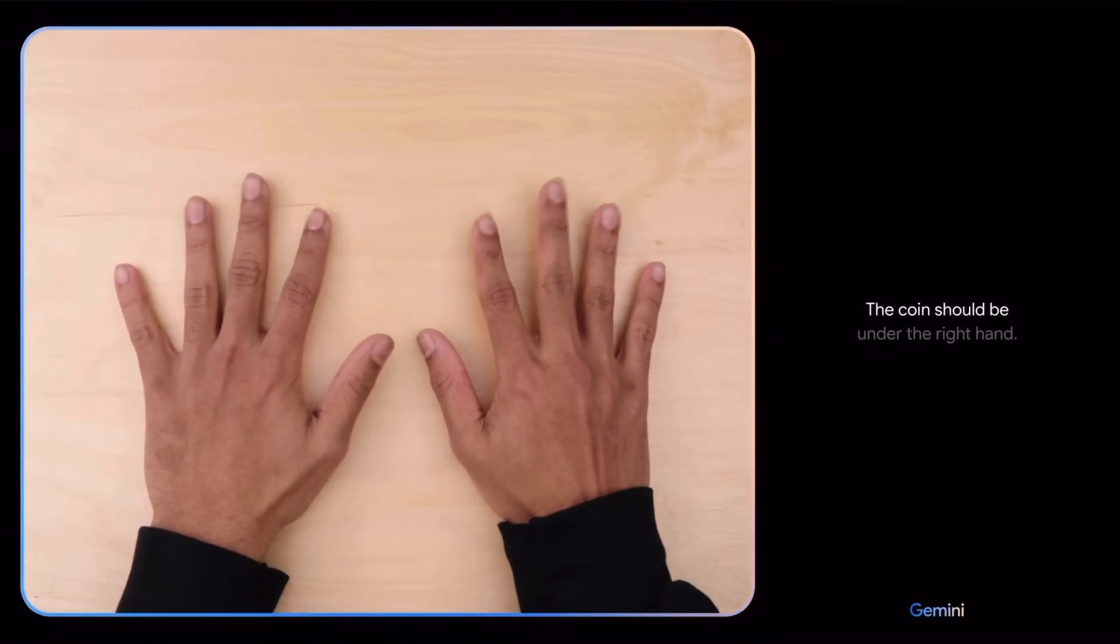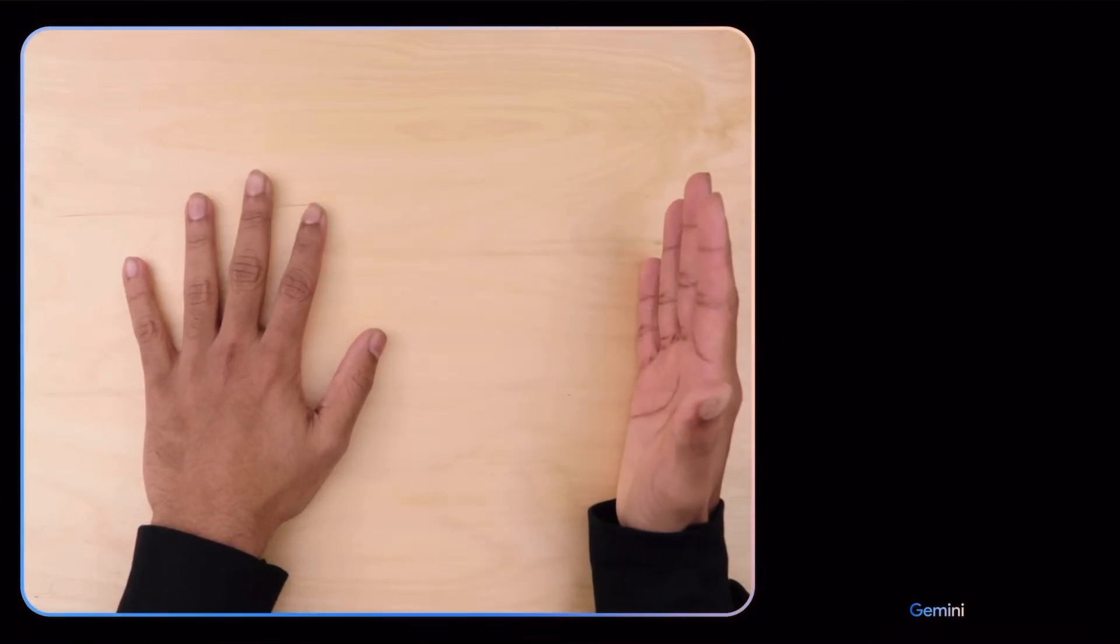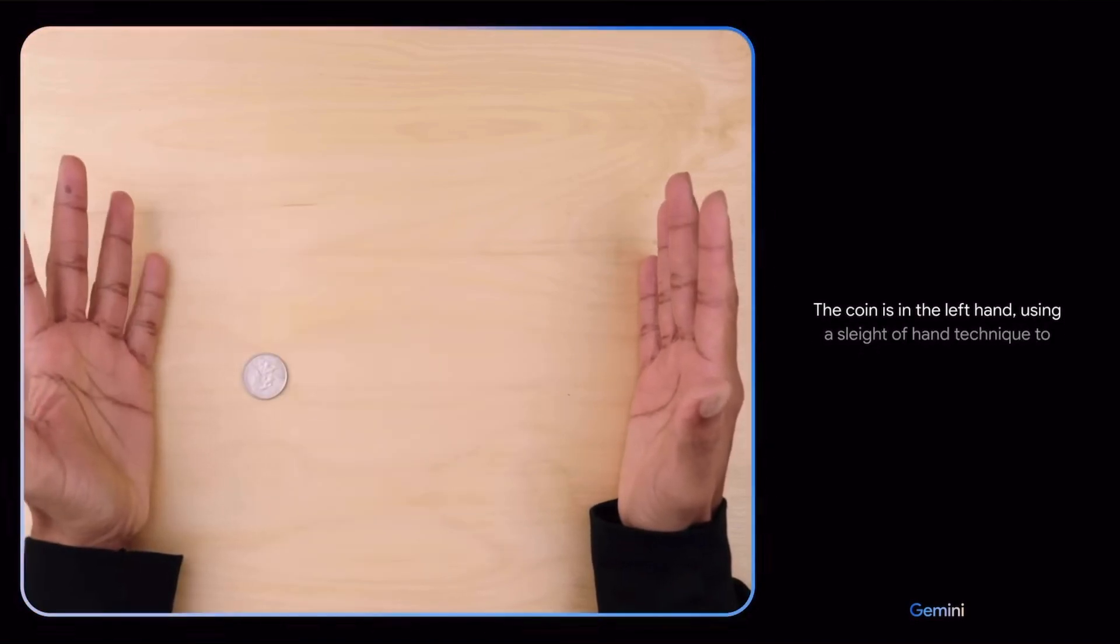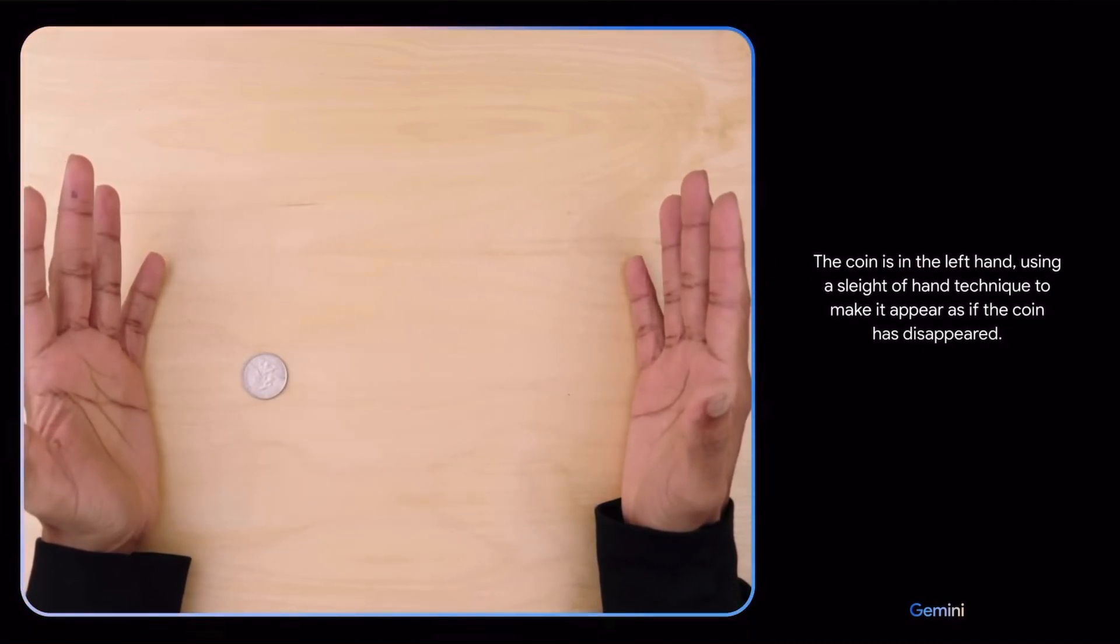The coin should be under the right hand. I don't know. The coin is in the left hand using a sleight of hand technique to make it appear as if the coin has disappeared.